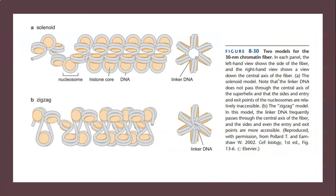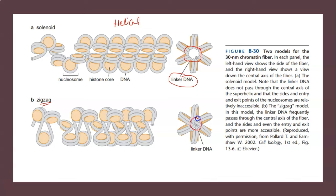Comparing the solenoid and zigzag models: the solenoid model explains a helical conformation where the linker DNA surrounds the central axis of the fiber. In the zigzag model, the pattern looks zigzag and the linker DNA crosses the central axis rather than circling it. Statement D described the solenoid model feature — linker DNA circling the central axis — and attributed it to the zigzag model, which is why that statement was incorrect.